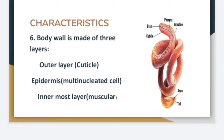The body wall of the nematodes is made up of three layers. The outer layer is the cuticle, as visible in the picture. The second layer is the epidermis, which is a multinucleated cell. The innermost layer is muscular.